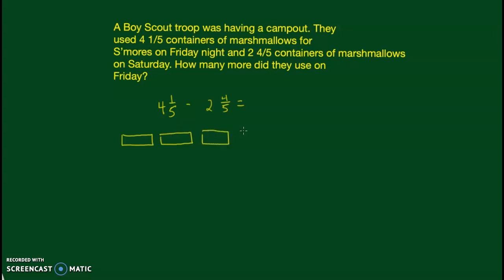I'll draw four whole containers plus one-fifth, dividing each into five sections and shading them in. We're going to imagine that they're all the same size. So this represents four and one-fifth containers of marshmallows.